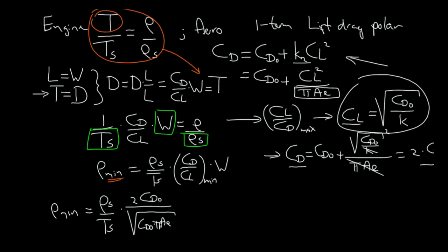We have to multiply this with the weight. I am just making how we write this slightly simpler. We still have Rho S divided by TS and then I get a factor 2 and I get one big square root where I have CD0 divided by pi Ae times the weight.